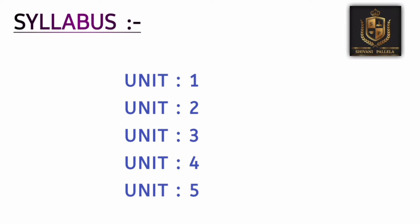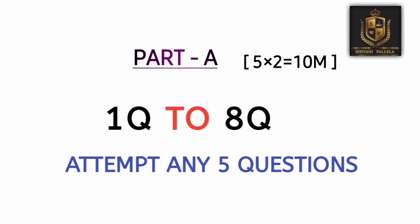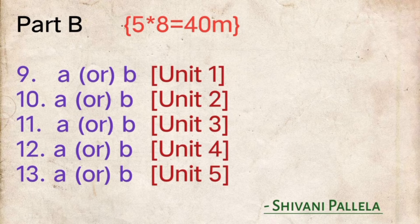The subject has a total of five units. It is a 50-marks question paper. In Part A, you need to attempt five questions out of eight; each question carries two marks, and you must write at least six to seven lines. In Part B, you need to attempt five questions, each carrying eight marks, and each question will have an internal choice.